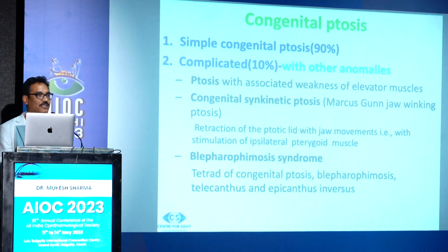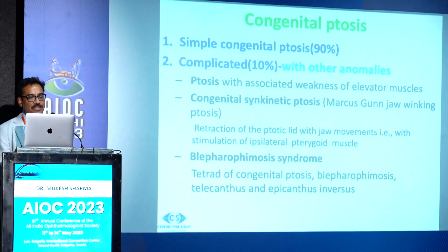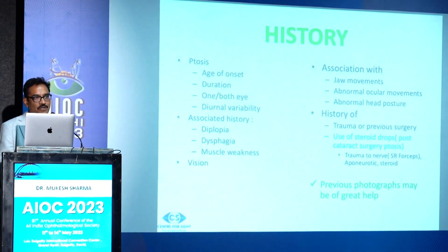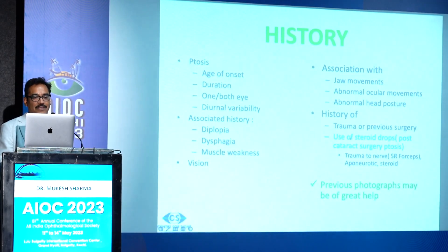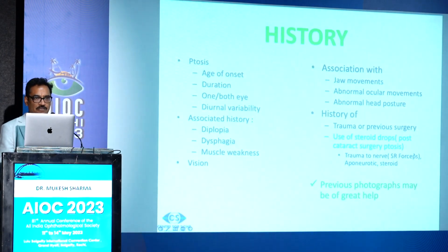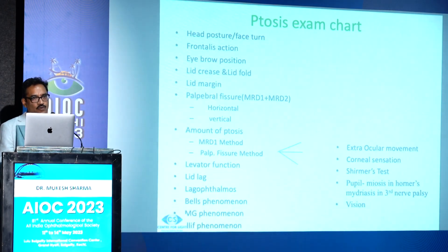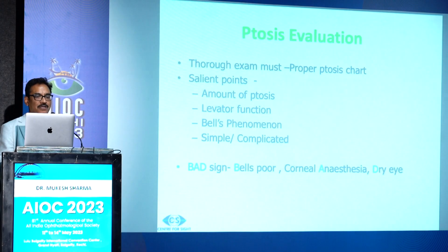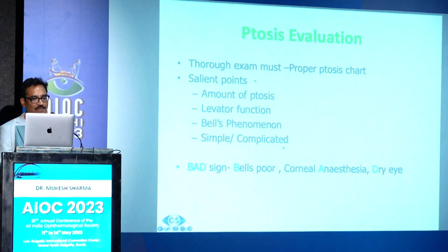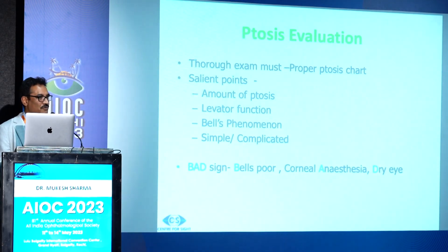When evaluating ptosis, take a thorough history. One very important point nowadays is use of steroid eye drops post-cataract surgery — ptosis is quite common in this context and generally disappears with time. In ptosis, make a detailed ptosis chart. Four mandatory points to check regardless of how busy you are: amount of ptosis measurement, levator function measurement, Bell's phenomenon checking, and whether the ptosis is simple or complicated. The mnemonic BAD sign for ptosis surgery: B stands for poor Bell's phenomenon, A for corneal anesthesia, and D for dry eye. If any of these three is present, patients do not do well after surgery.